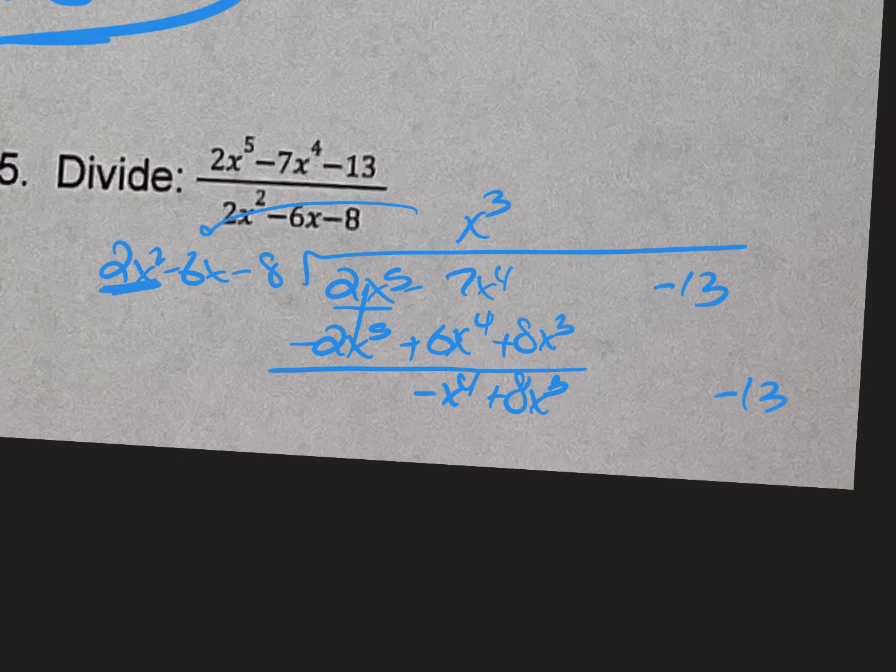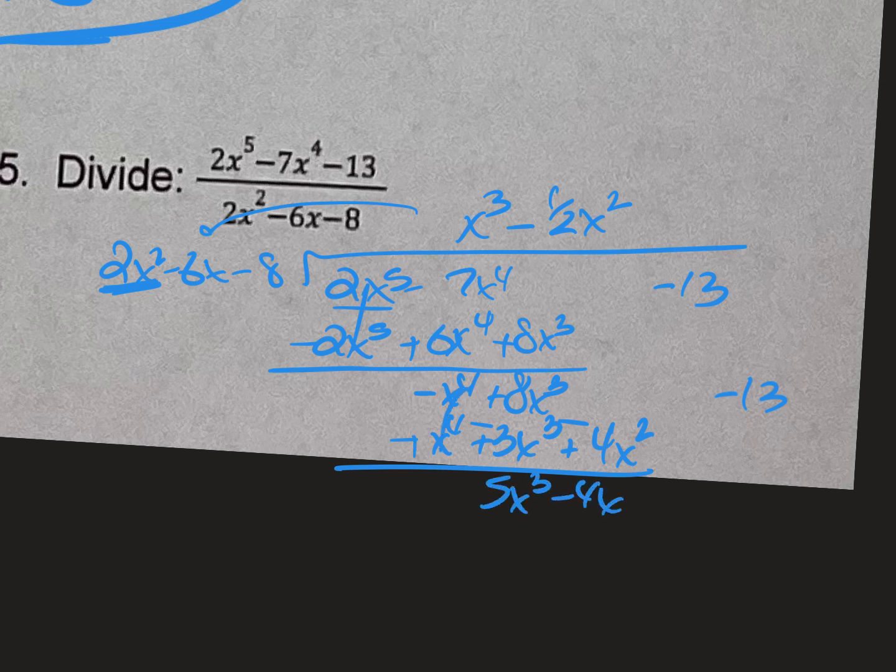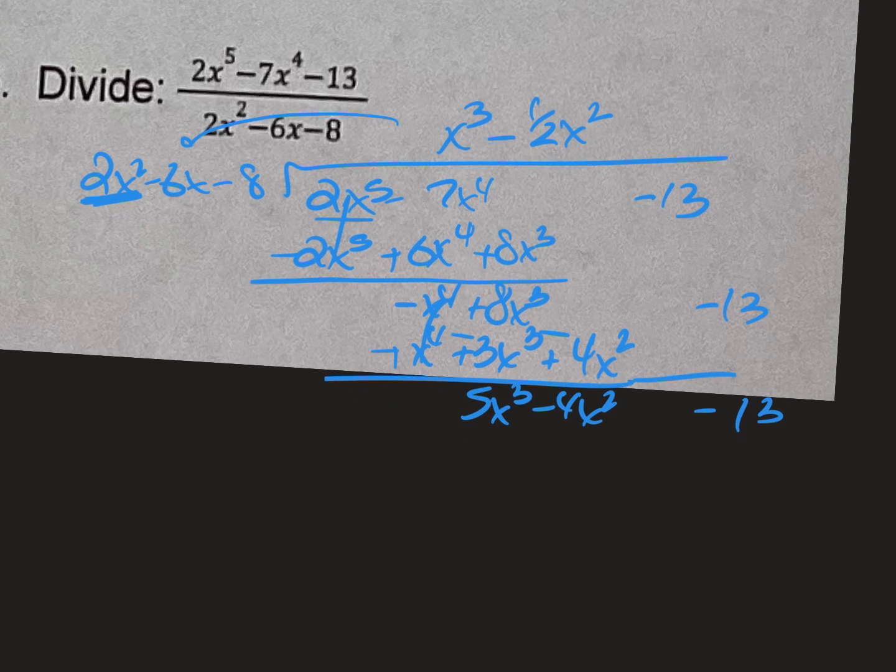What do I multiply 2x squared by to get negative x to the 4th? It's going to be negative 1 half x squared. So I'm going to multiply everything out there by negative 1 half x squared, which would give me negative x to the 4th plus 3x cubed plus 4x squared. Draw the line, change the signs. That's gone. I got 5x cubed minus 4x squared, still bringing down that 13. So I've got to ask myself, what do I multiply 2 by to get 5x cubed? The answer to that would be 5 halves x.